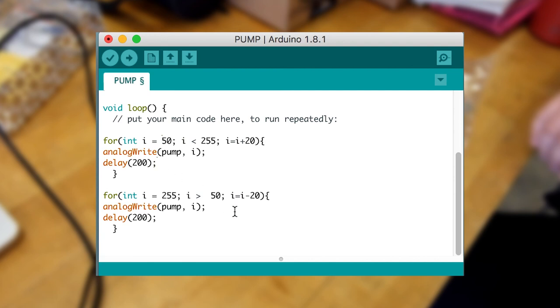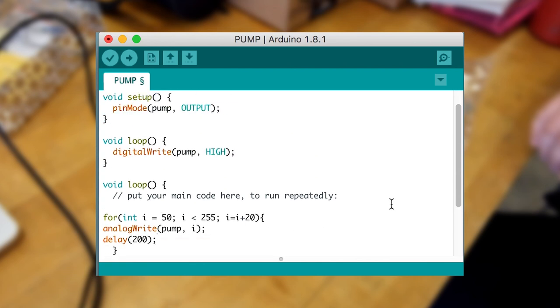Now the next for loop you see is kind of the opposite of what we just looked at. The integer i starts at 255, and it decreases by 20 every loop, until it reaches 50. And then it starts all over again. This behavior sounds like human breathing. It's not actually inhaling and exhaling, it's just inhaling at different rates. And that's what you're about to see in the next part of this video. So let's turn off this loop, and give it a go.